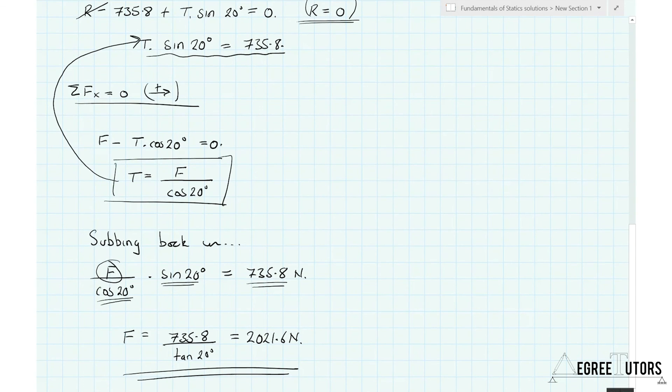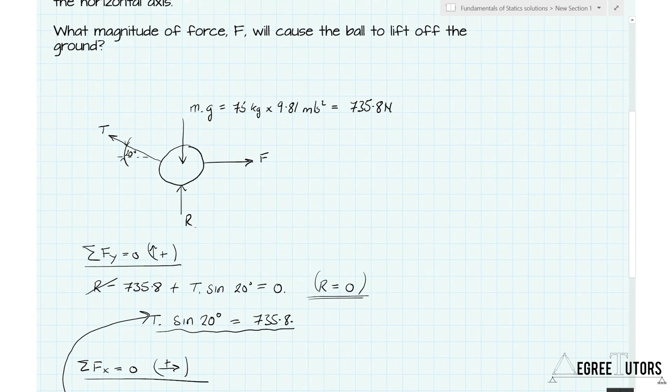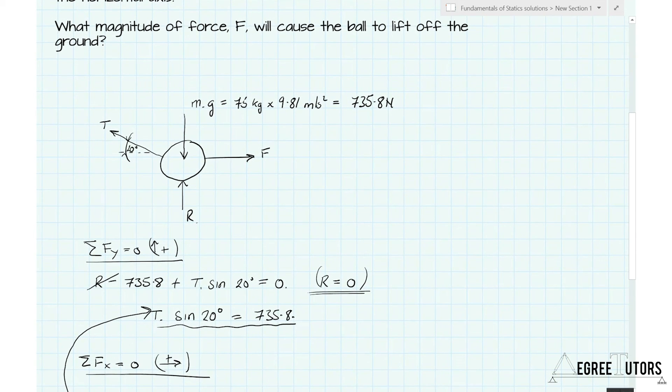So we've worked out the value of the force F for which our ball is in a state of static equilibrium and the second condition was that the reaction force R equals zero. So in other words, we've worked out the value of the force F for which the ball will just about lift up off the ground, i.e., the ground is exerting no reaction force on the ball because the ball is exerting no self-weight force down onto the ground.